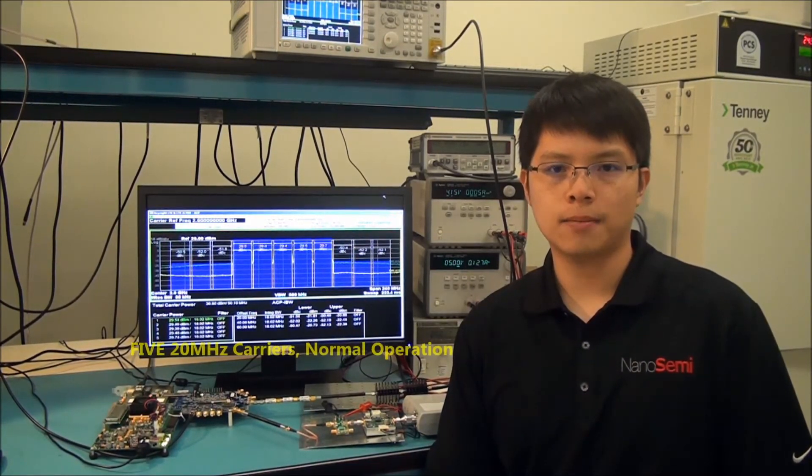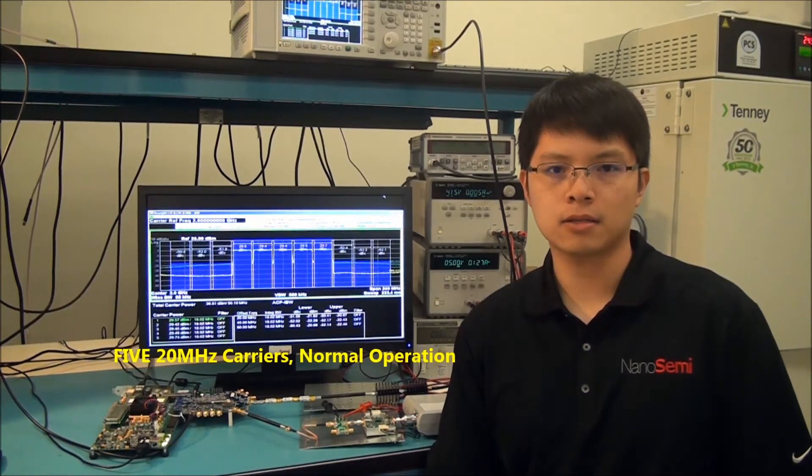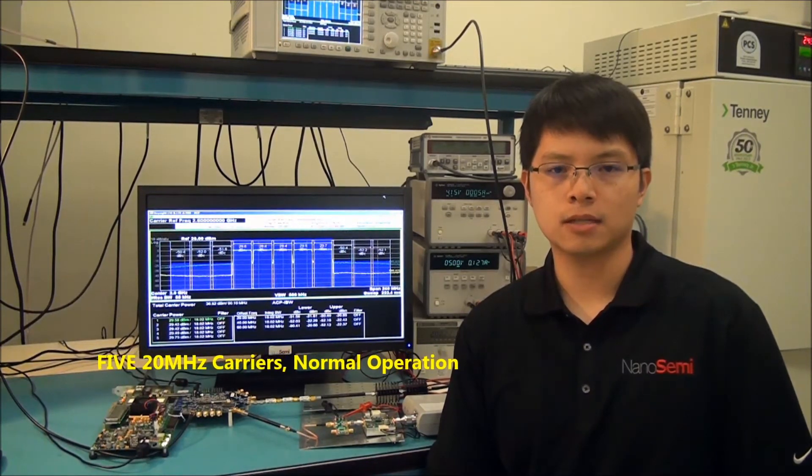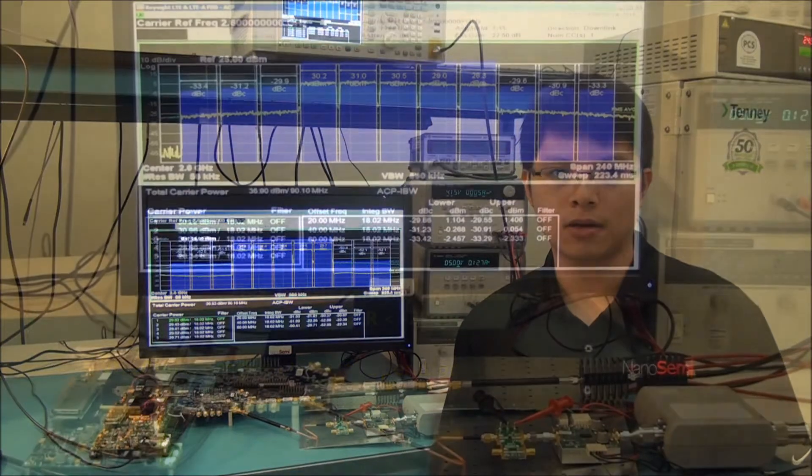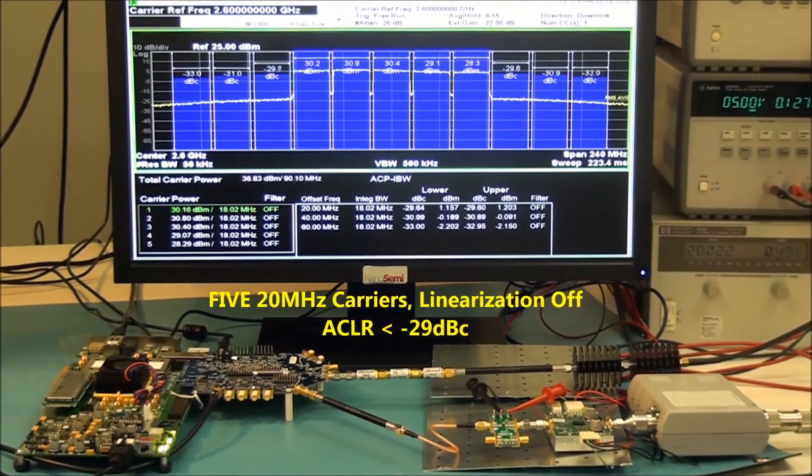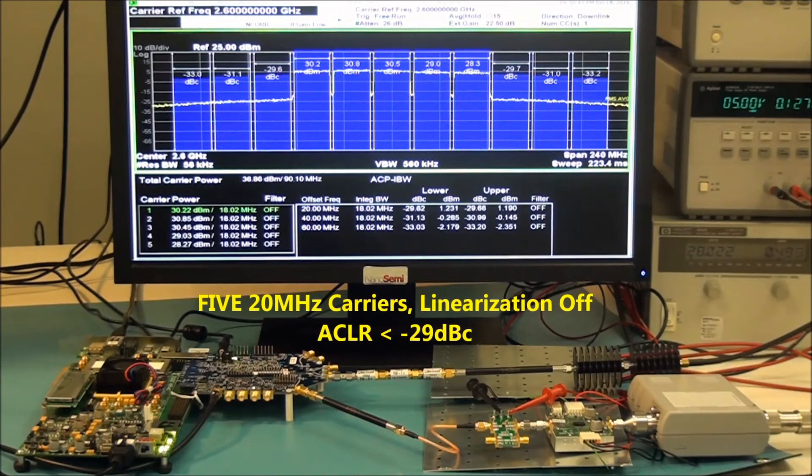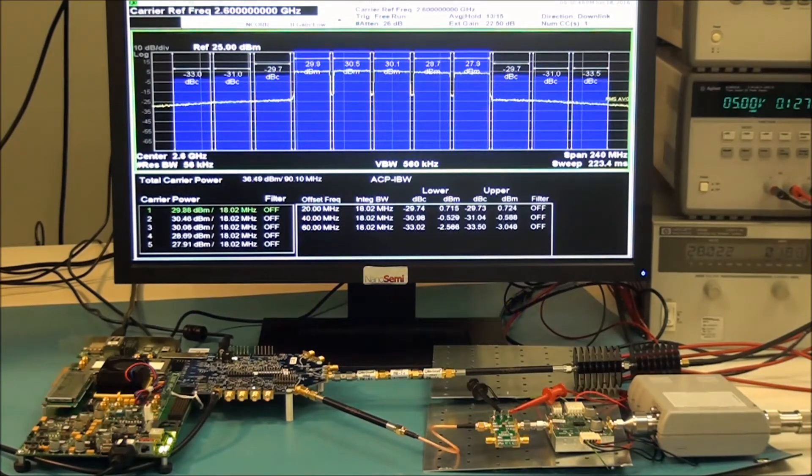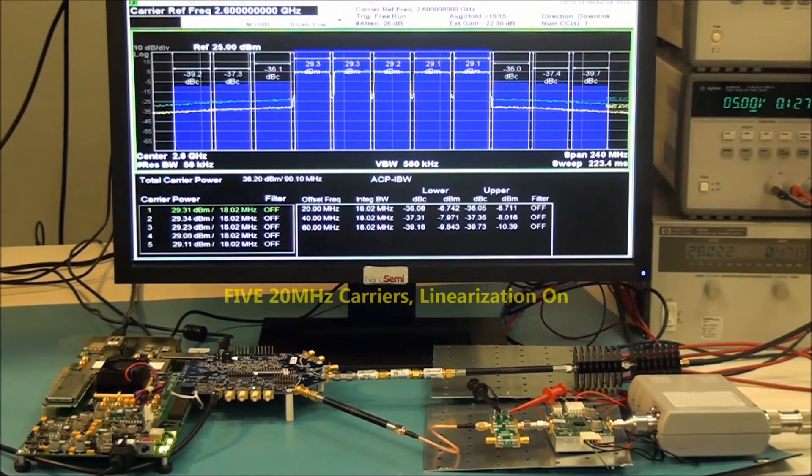The demo begins with transmitting five 20 MHz component carriers to obtain a total transmission bandwidth of 100 MHz. At 2.6 GHz carrier frequency, the gallium nitride power amplifier operating at 5 Watt has an adjacent channel leakage ratio of minus 29 dBc.